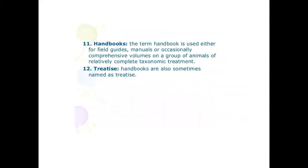Handbooks: The term handbook is used either for field guides, manuals, or occasionally comprehensive volumes on a group of animals with relatively complete taxonomic treatment. Treatises: Books are also sometimes named as treatises.